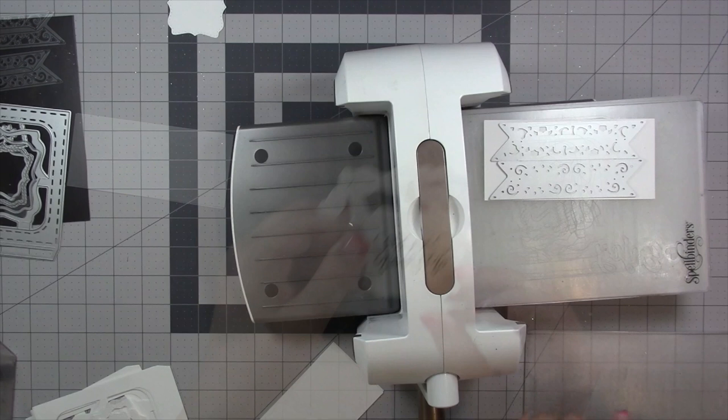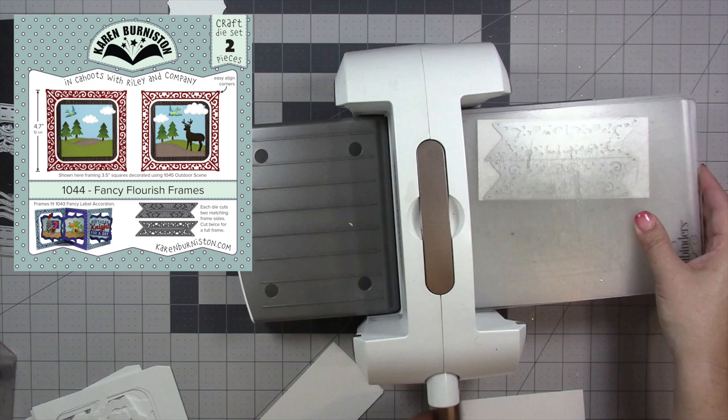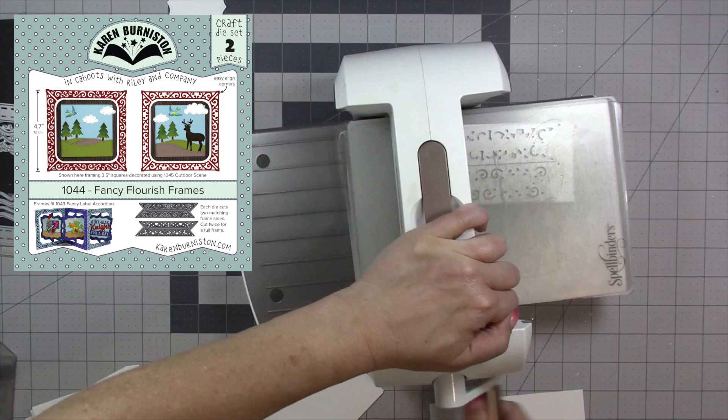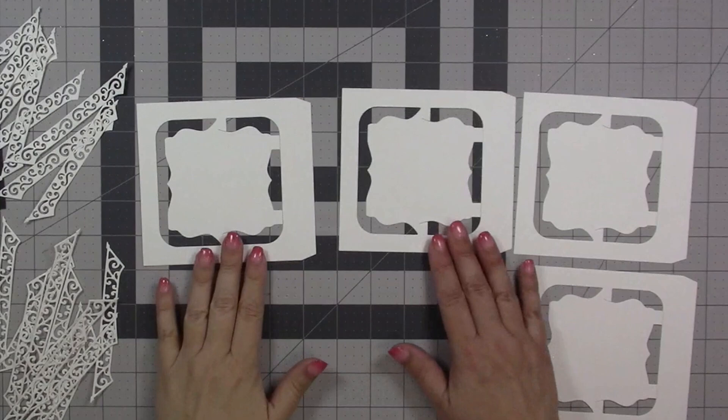We have a companion die to the fancy label accordion called the fancy flourish frames and it creates two beautiful frames that will fit that fancy label accordion perfectly. I will die cut enough to make five full frames.